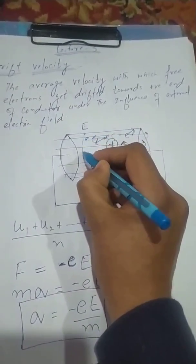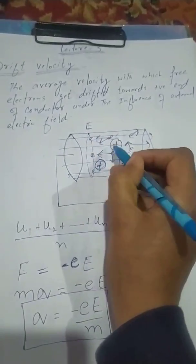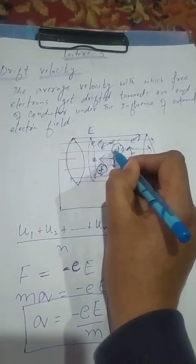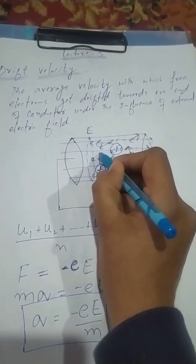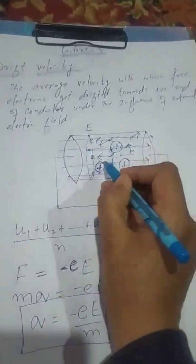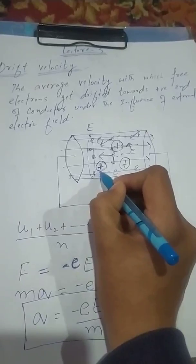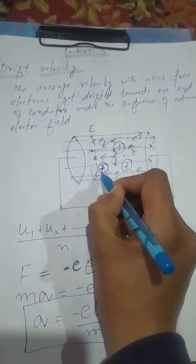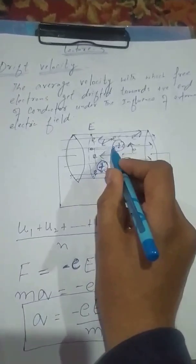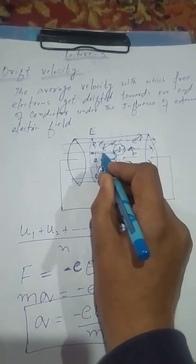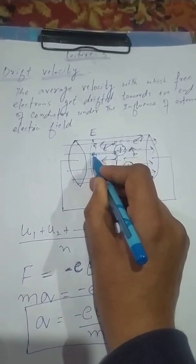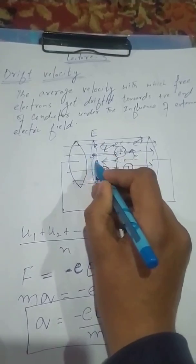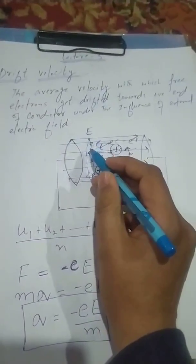Suppose I have a cross section. An electron travels from one point to another and collides — it has kinetic energy. The electron travels, collides with a kernel, and loses energy, then accelerates again. An electron gains velocity between collisions. Electrons crossing the cross section have different speeds, and the average value of those different speeds gives us the drift velocity.